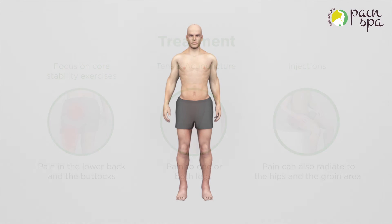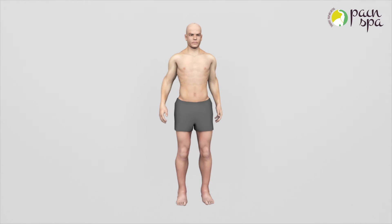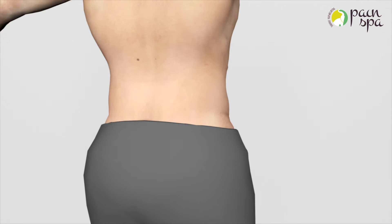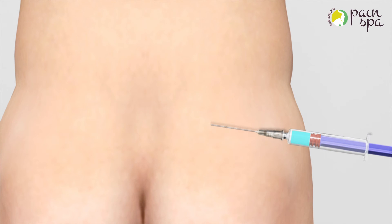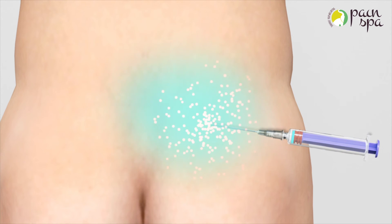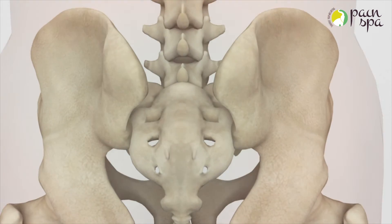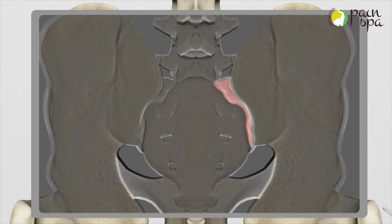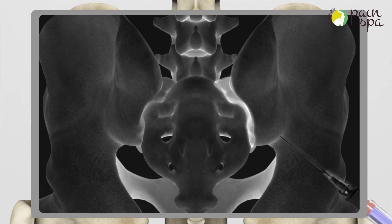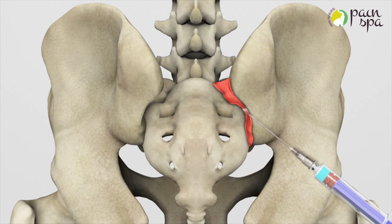Dr. Krishna is highly experienced in performing sacroiliac joint injections. The procedure is done under local anaesthetic. Dr. Krishna will initially numb the skin and deeper tissues with a numbing medicine. He will then use a special x-ray machine or an ultrasound machine to guide the needle accurately into the sacroiliac joint. A mixture of local anaesthetic and steroid is injected slowly into the joint.